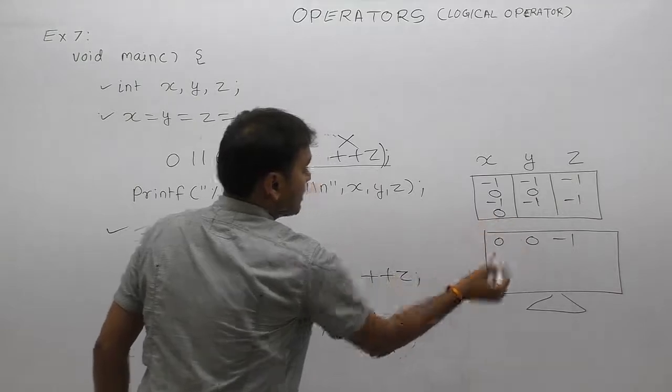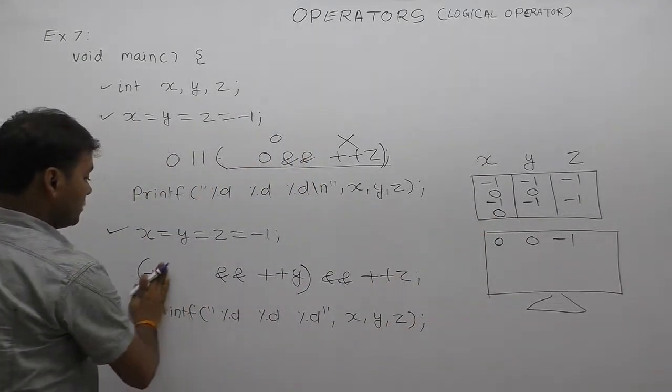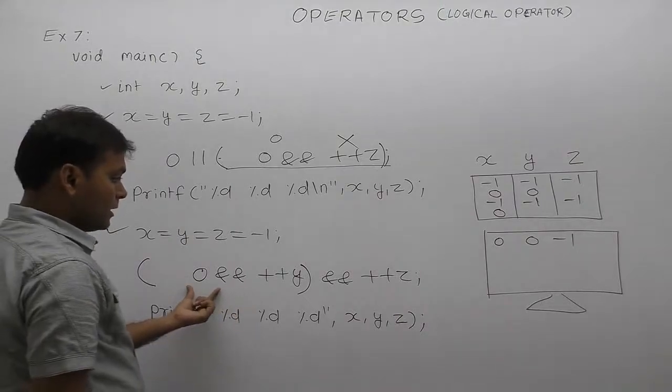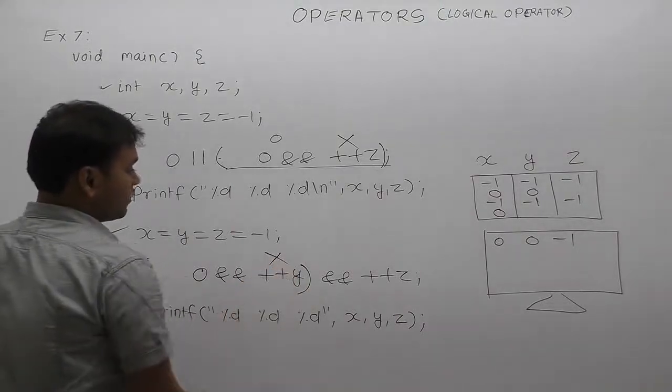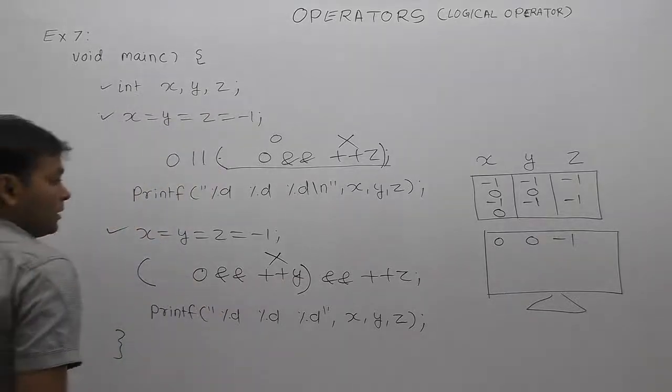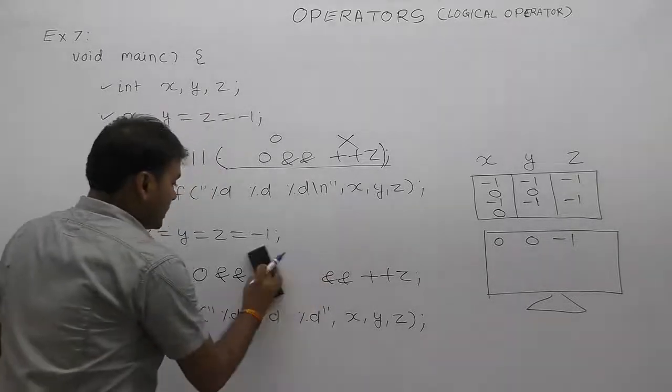First condition is false. Therefore second condition never going to be tested. Therefore y is not incremented. First AND overall result is false. False means 0. First condition false, second again not tested.